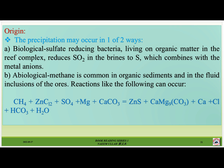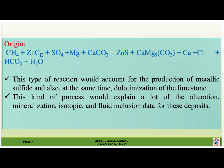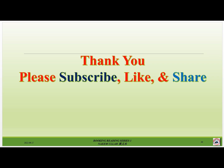Precipitation may occur in one or two ways. First, biological sulfate reduction — reducing bacteria living on organic matter in the reef complex reduce SO4 in the brines to sulfur, which combines with the metal cations. Second, abiological methane is common in organic sediments and in the fluid inclusions of the ores. Reactions involving methane can account for the production of metallic sulfide and simultaneously the dolomitization of the limestone. This type of process would explain much of the alteration and mineralization supported by isotopic and fluid inclusion data for these deposits.